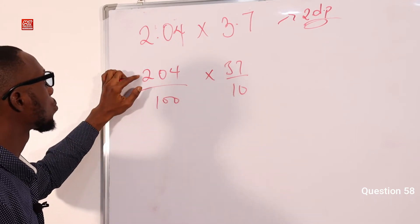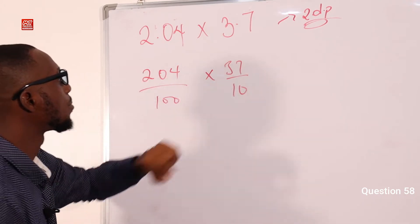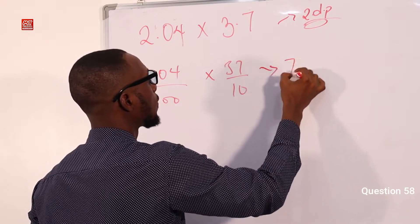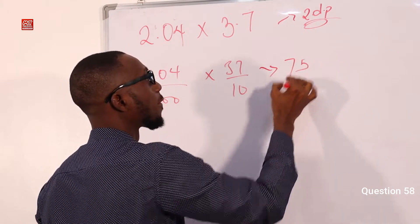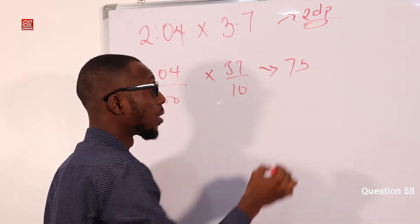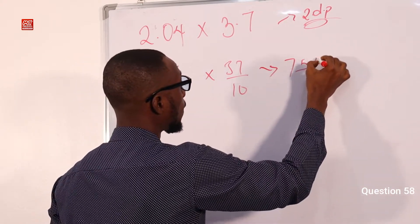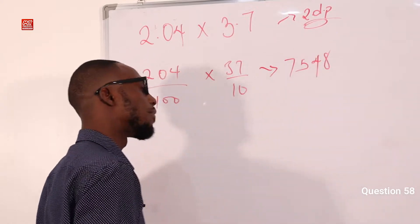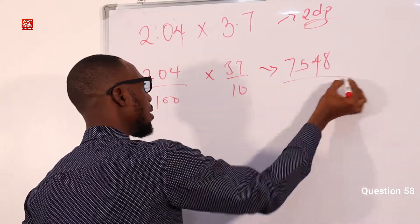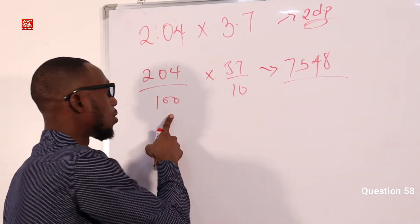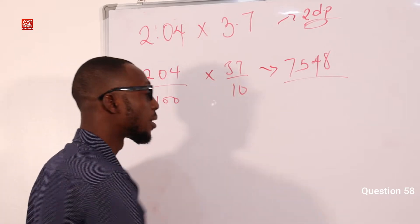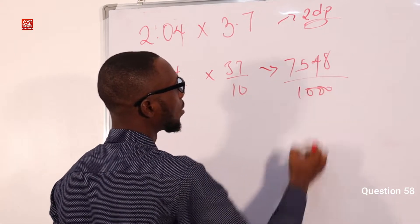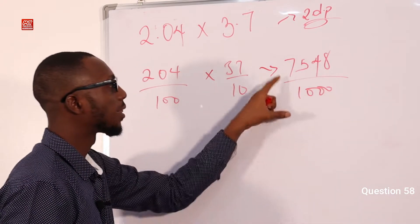Multiplying 204 times 37 gives us 7548. The denominator is 100 times 10, which is 1000. So we divide 7548 by 1000. Moving the decimal point 3 places gives 7.548.